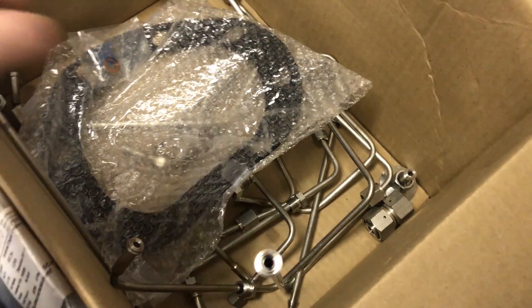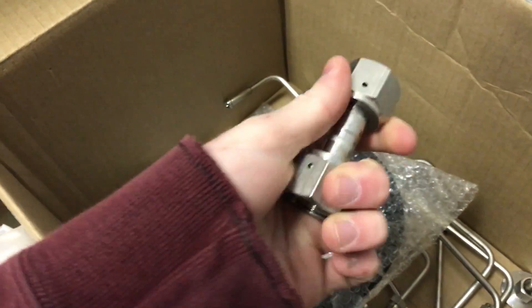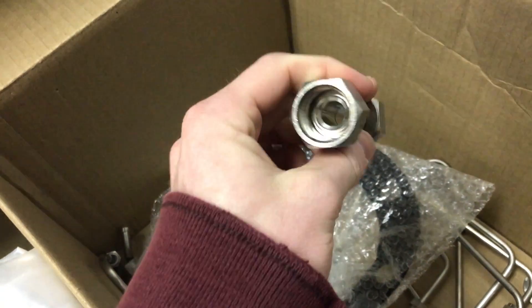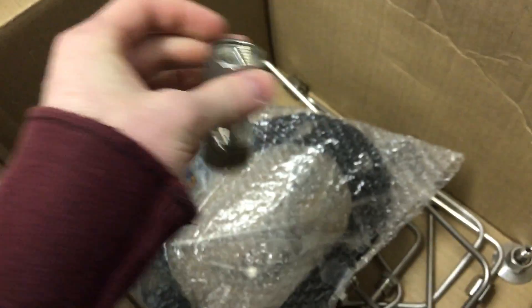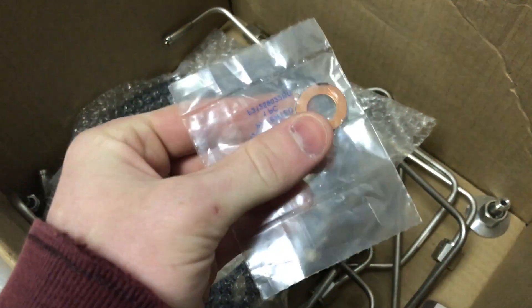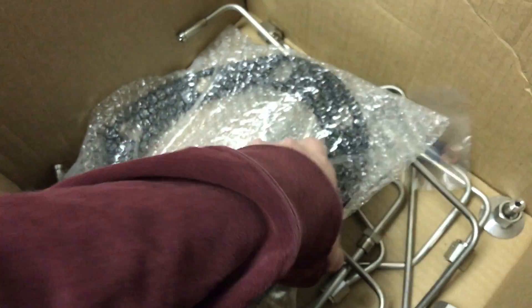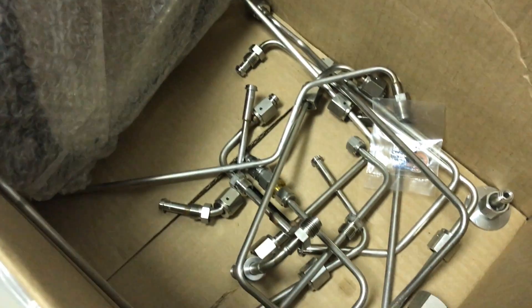Something else you'll probably run into are these awesome fittings. These are called VCR, and it looks like that. They're very similar to conflat in that they have a knife edge sort of thing, and they use gaskets. Here's one, this has a retaining clip on it, but it's a copper gasket, just like the conflat. And these things make very, very good seals.